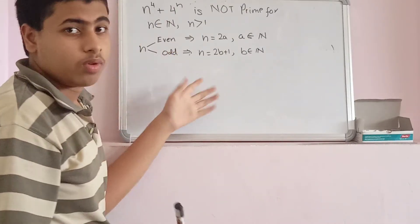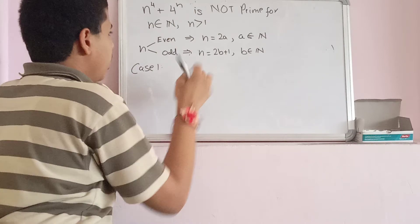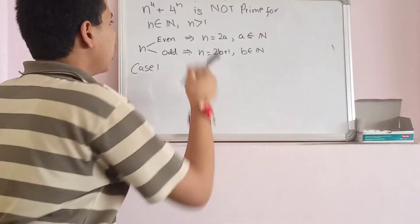Now, let's go ahead and prove it. Case 1: n is even. Then what happens?